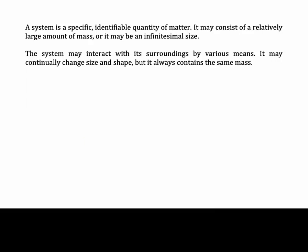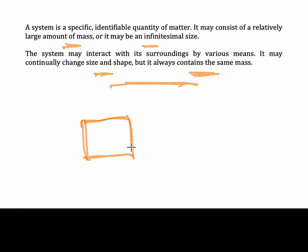A system is a specific identifiable quantity of matter. It may consist of a relatively large amount of mass or it may be infinitesimal in size. The system may interact with its surroundings by various means. It may continually change size and shape, but it always contains the same mass — this is the idea of conservation of mass.